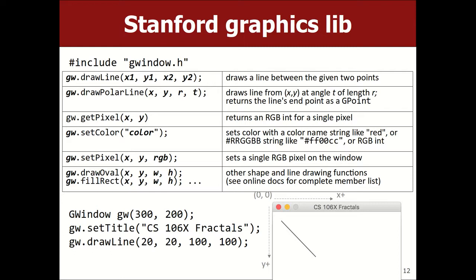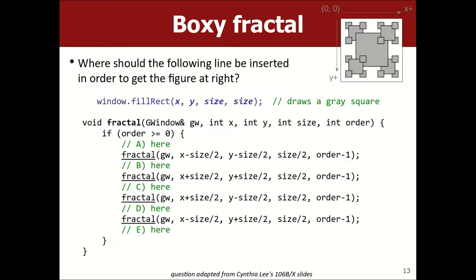To draw fractals, we'll use the Stanford graphics library. It uses a standard coordinate system where (0,0) is at the top-left, going down and right. We draw on an object called a GWindow. The main method we need is just drawing lines from one point to another. For this fractal, you have to draw squares in the right order, making four recursive calls for each level.